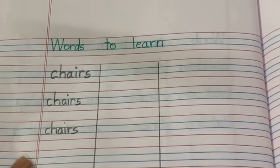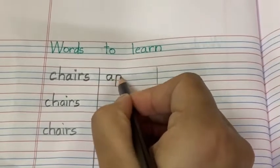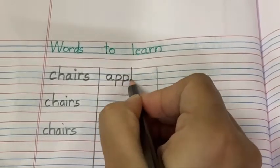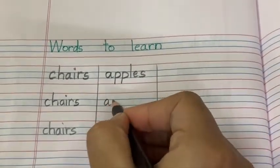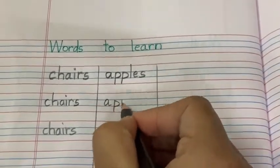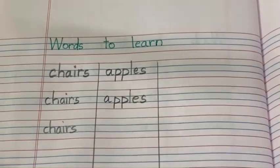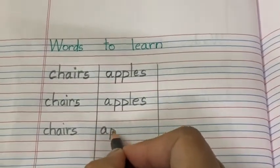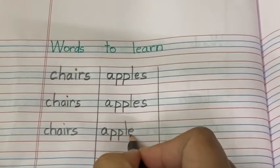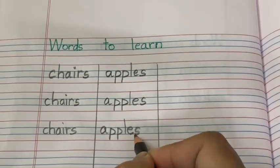Chairs. Now next one is apples. A, P, P, L, E, S. Apples. A, P, P, L, E, S. Apples. One more time. A, P, P, L, E. Apple and S. Right? Apples.